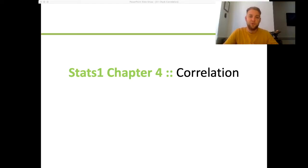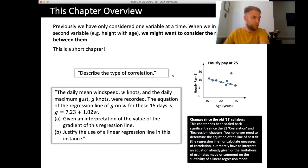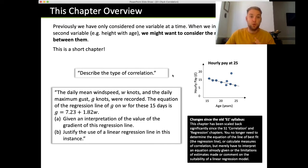Hello and welcome to the AS Statistics chapter 4 on Correlation. This is actually one of the shortest chapters throughout all of AS, and it's only touched upon very briefly. Let's get straight into it. In this chapter, we're looking at comparing two different variables or two types of relationships.